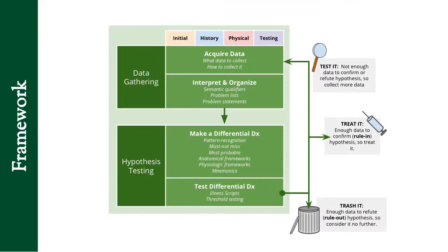This is our framework. Let me review it quickly. We have four places that we're going to collect data from. The initial data comes from either the chief complaint, some vital signs, or information from the paramedics. From each one of these sources, you gather data and then do some hypothesis testing. You start interpreting it and make a differential diagnosis using one of these methods, and you ask: do I have enough evidence to start treating or testing anything yet? If not, let's go to the next step — history. You need to start asking questions based on your differential.